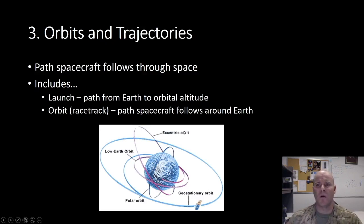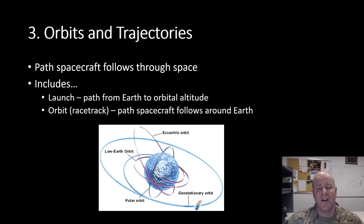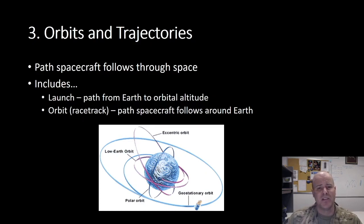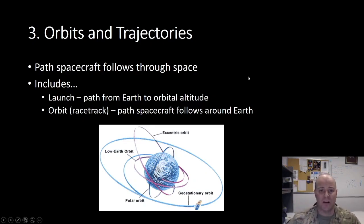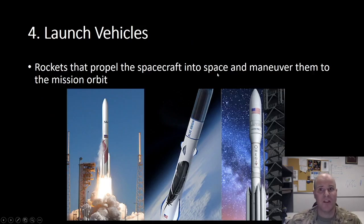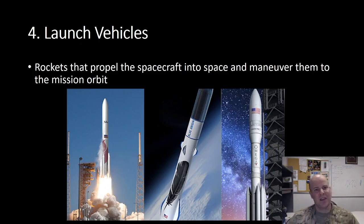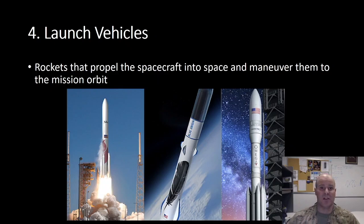The third element is that of an orbit or a trajectory. An orbit is the path the spacecraft follows through space. When we talk about orbits or trajectories, there are two distinct paths: the launch path from Earth to orbital altitude, and then the orbit itself — the path the spacecraft follows around the Earth. Fourth, we identify a launch vehicle. All space missions incorporate some sort of launch vehicle — a rocket that propels our spacecraft into space and maneuvers it to the mission orbit.